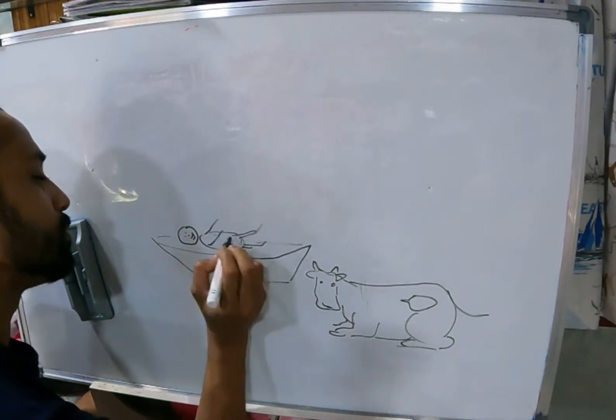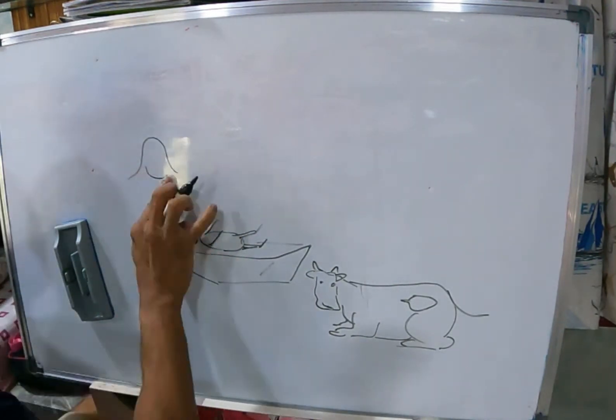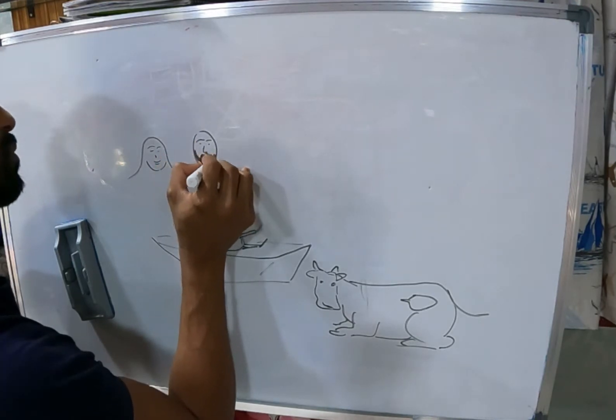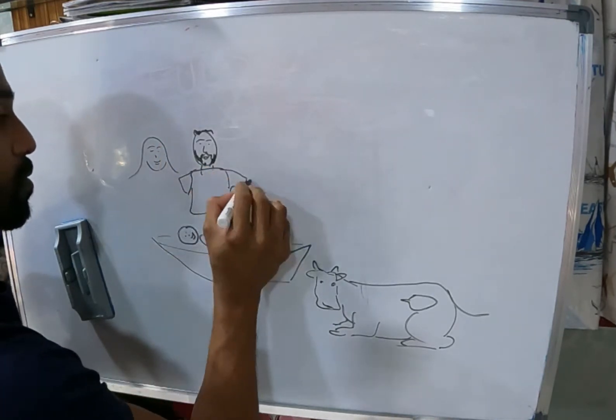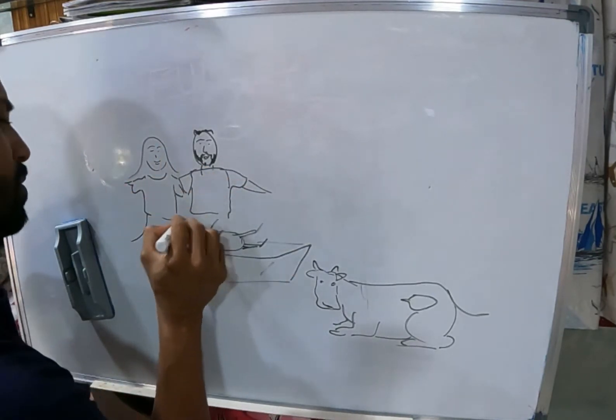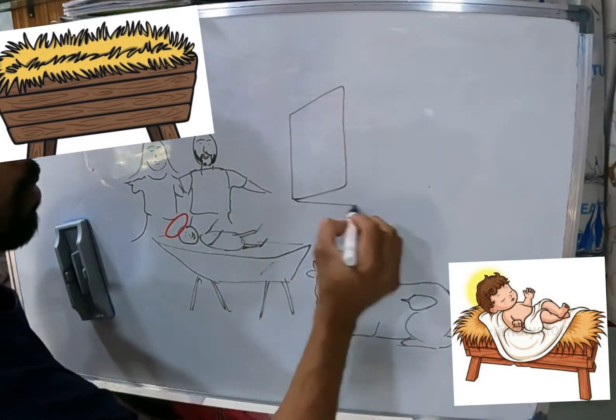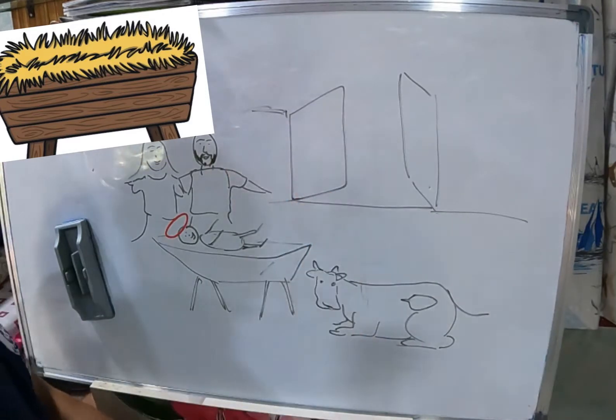That night, baby Jesus was born and Mary wrapped him in warm clothes and put him in a manger. A manger is a long open container for animals to eat or drink from.